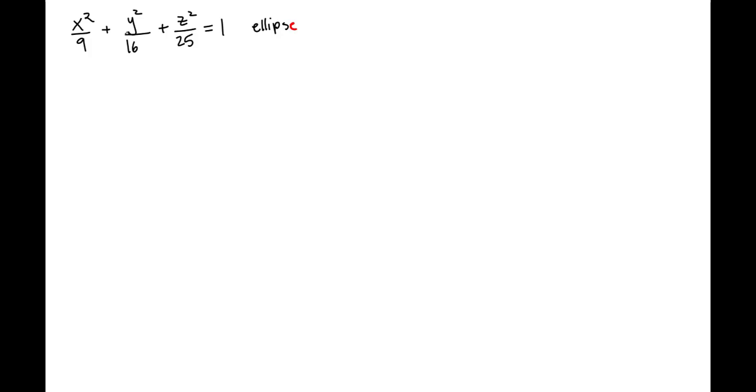So, for this, let's construct three traces. Let's construct a y, z trace. This will give us a line of intersection in the y, z plane. We'll construct an x, y trace, which will give us a line of intersection in the x, y plane. And we'll construct a z, x trace, which will give us a line of intersection in the z, x plane. With these three traces, we'll be able to get a good sense for what this ellipse looks like.